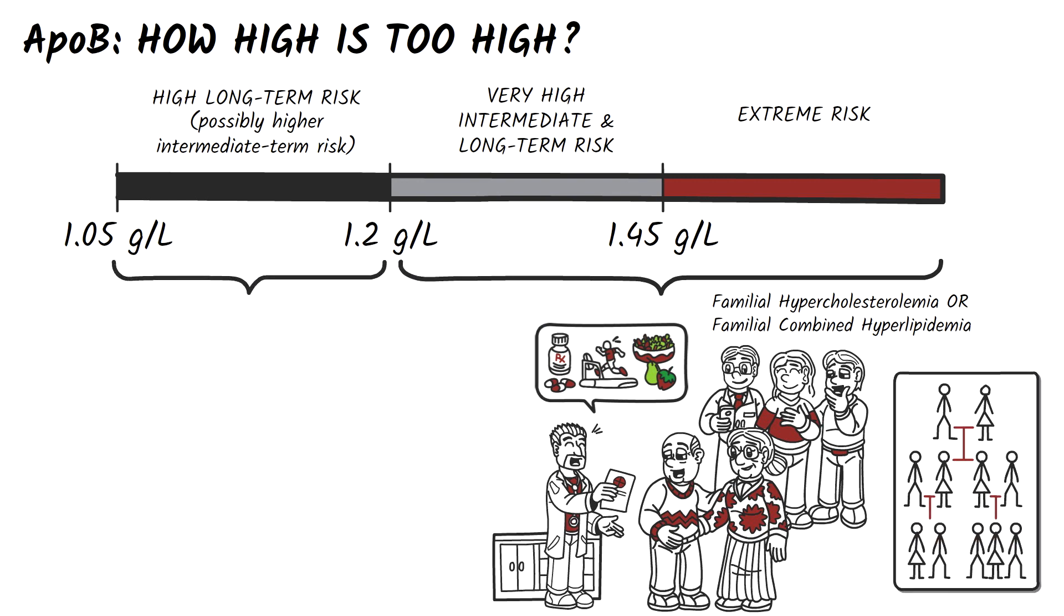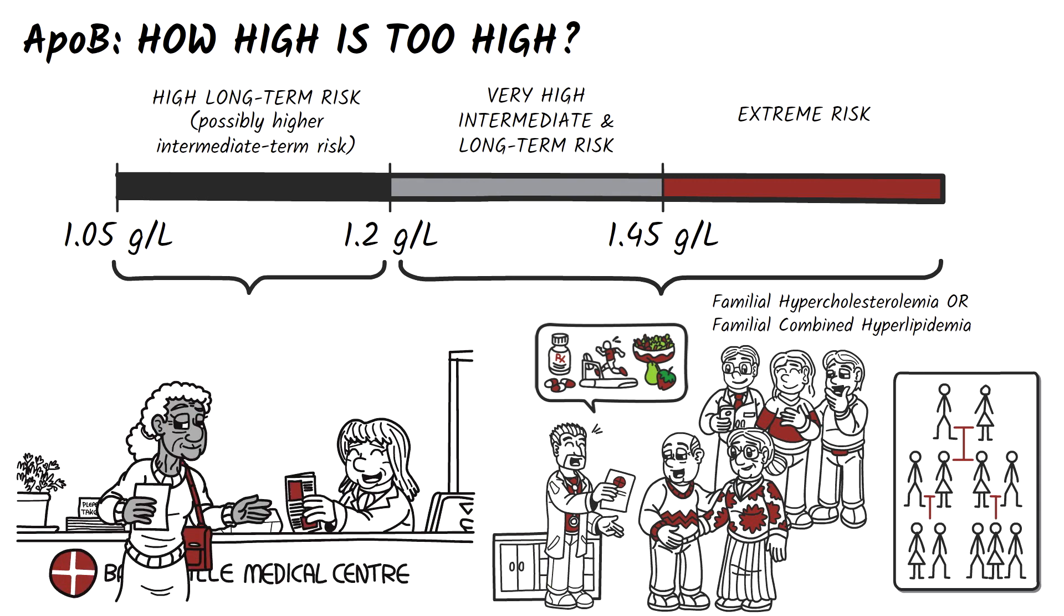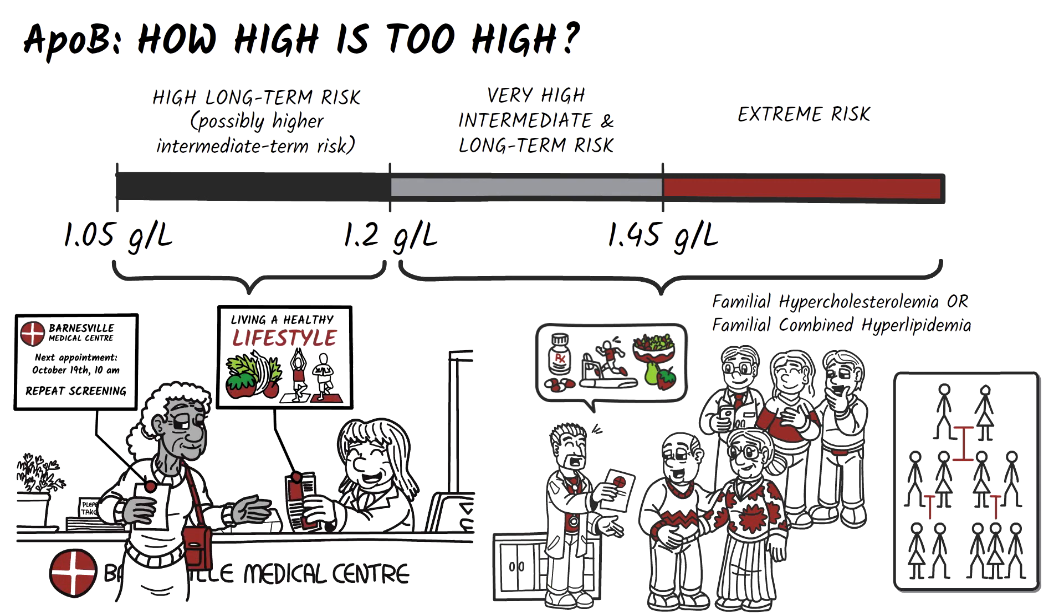If your patient's ApoB level falls in the lower range, you should repeat and confirm these findings at the next clinic visit and recommend lifestyle measures such as healthy diet, exercise, stopping smoking, etc.